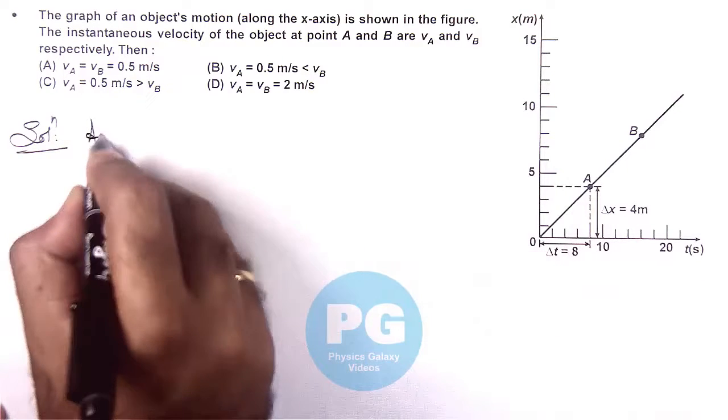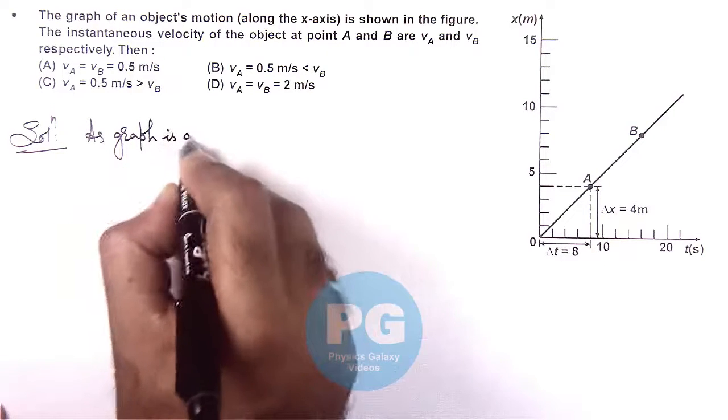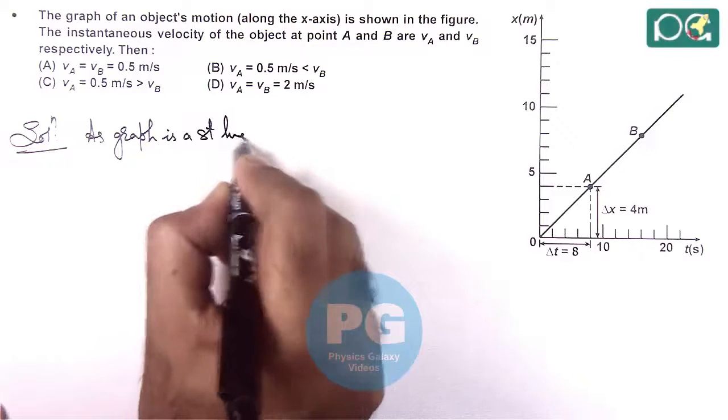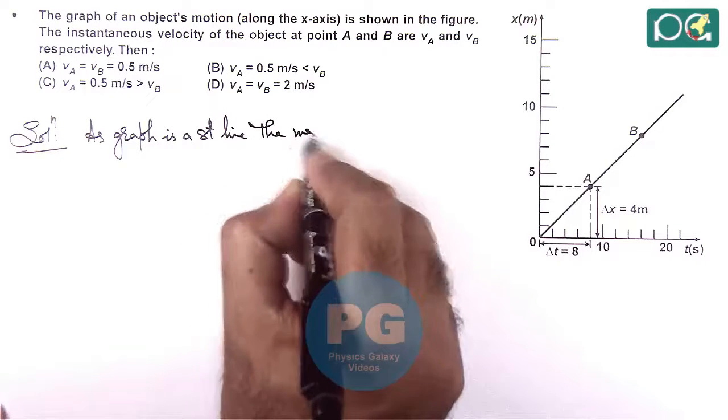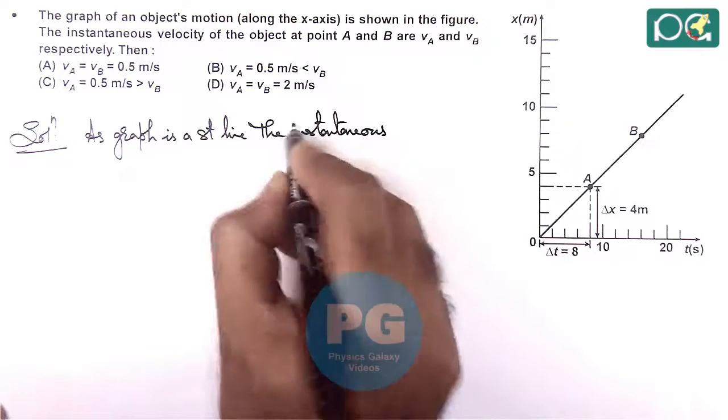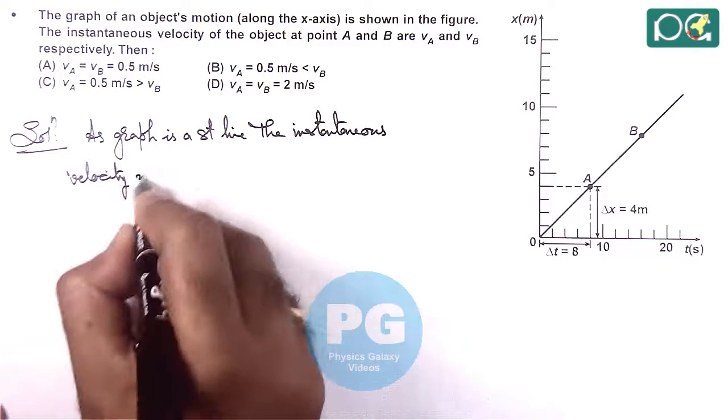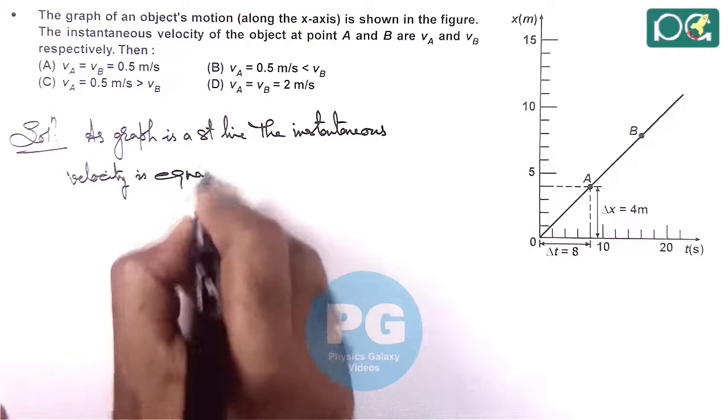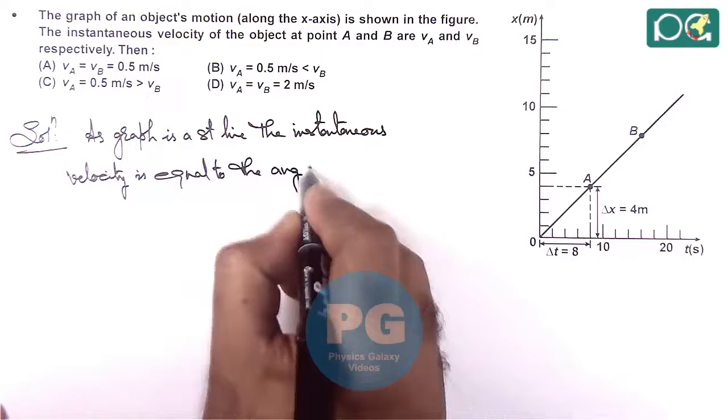And we can write as, graph is a straight line, the instantaneous velocity is equal to the average velocity in this situation.